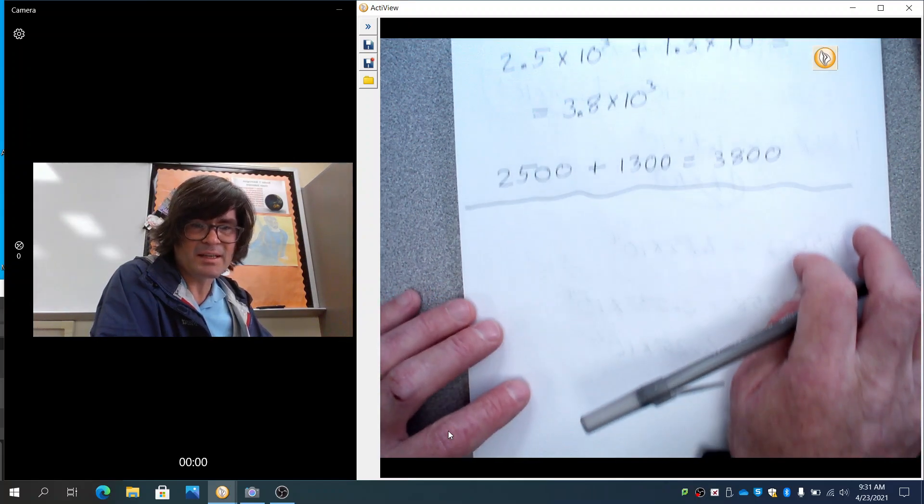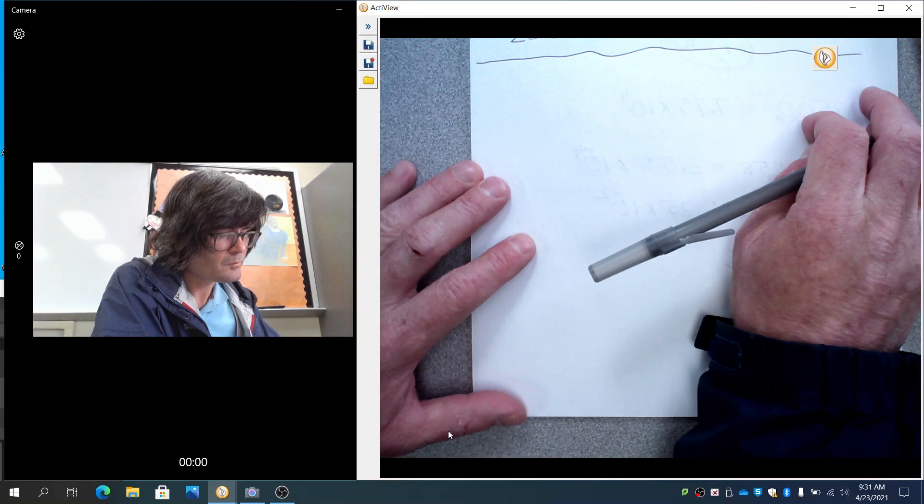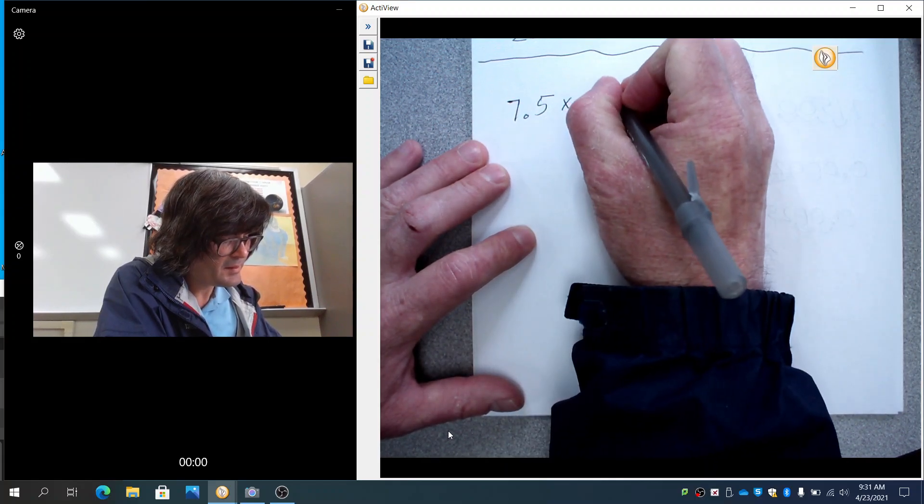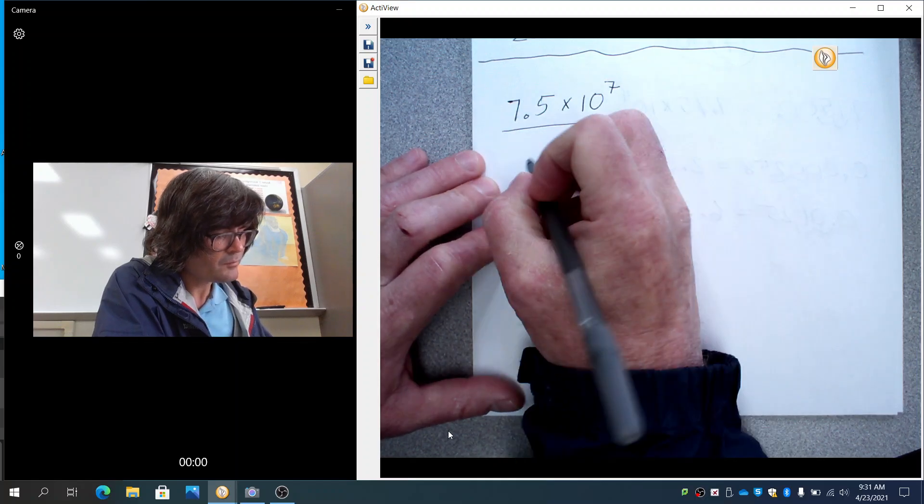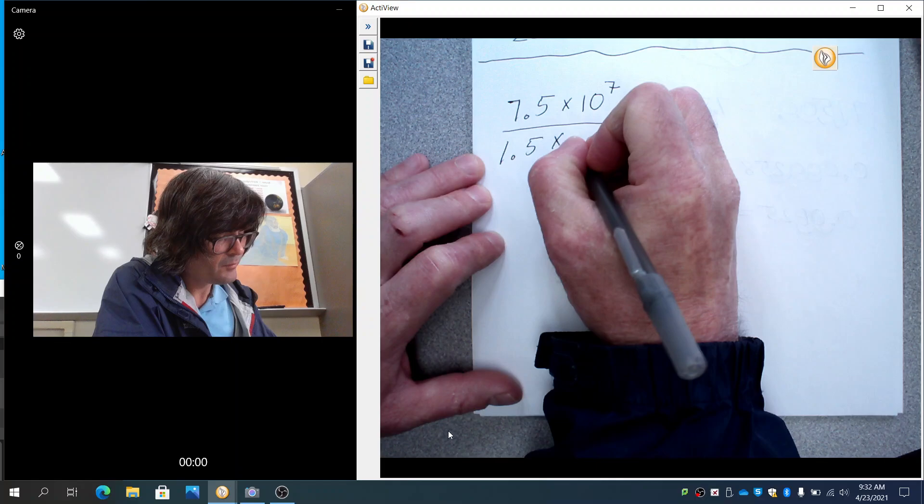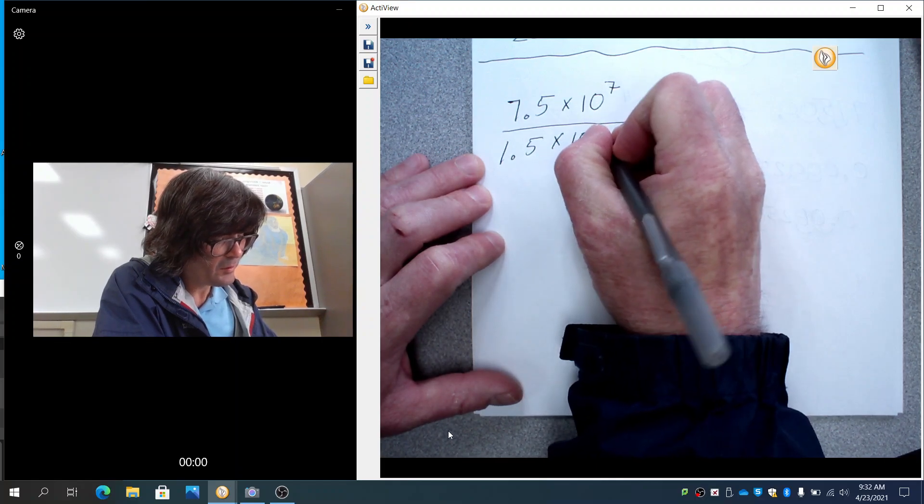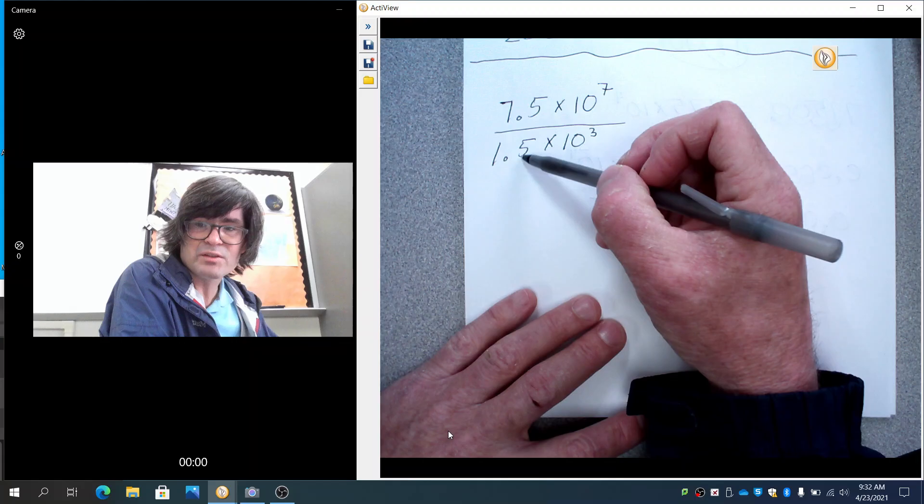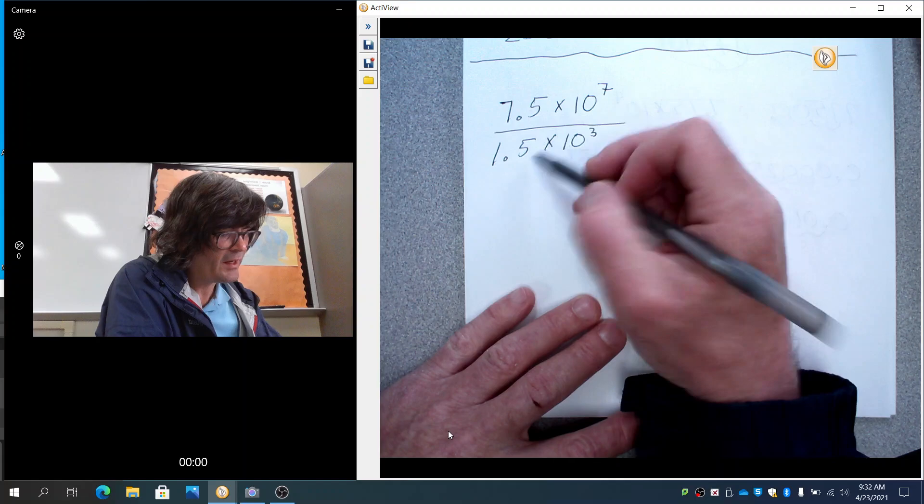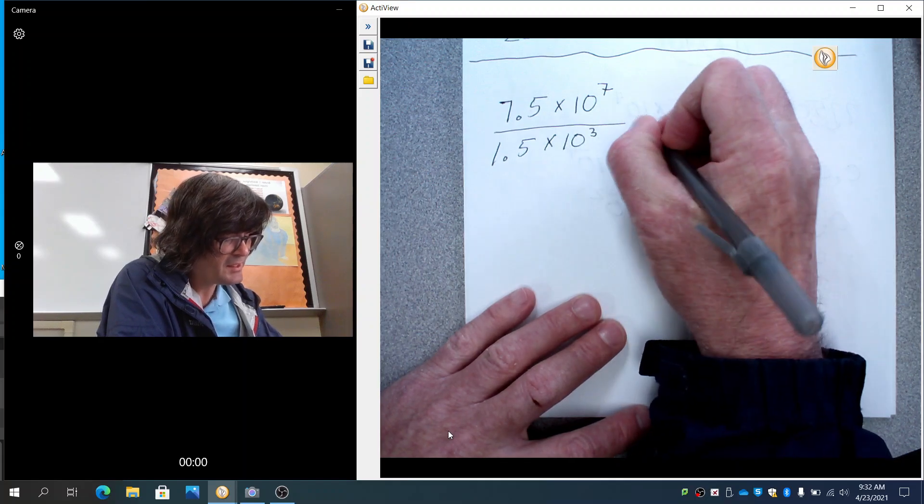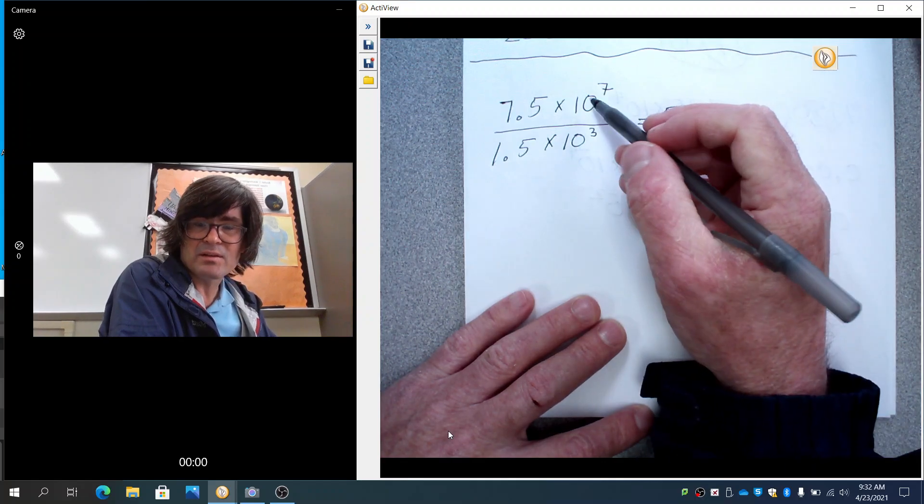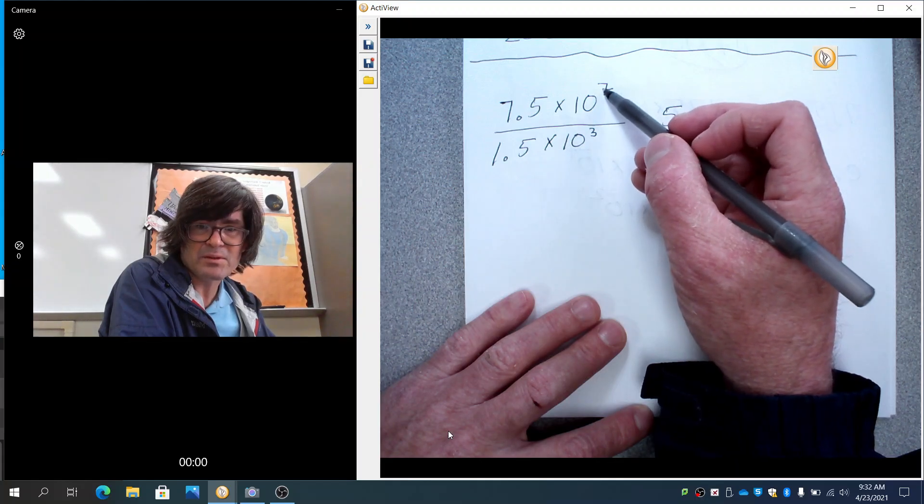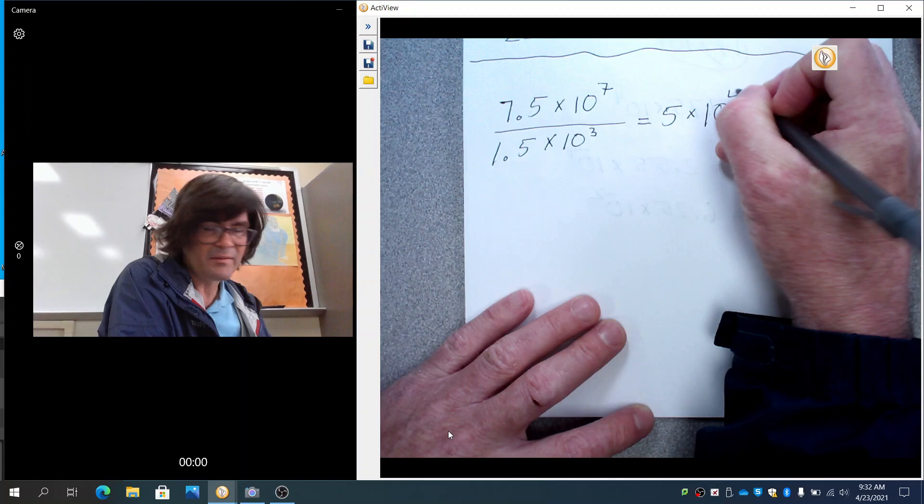Okay, multiply and divide. Let's take a look at that. We'll start with division. 7.5 times 10 to the seventh over 1.5 times 10 to the third. If you have scientific notation terms that you want to divide, you're going to divide these numbers first and then these numbers next. 7.5 divided by 1.5 comes out nicely. It's 5. And then if you want to divide these tens with exponents, the rule of exponents and division is that you subtract the exponents. So you're going to do 7 minus 3. 5 times 10 to the fourth.